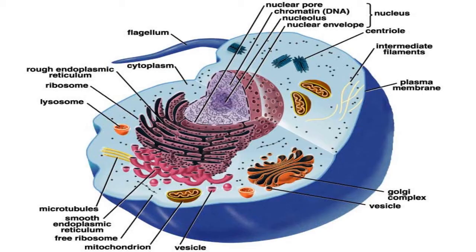The Golgi apparatus is the distribution and shipping department for the cell's chemical products. It modifies proteins and fats built in the endoplasmic reticulum and prepares them for export outside of the cell.